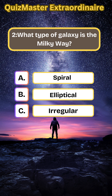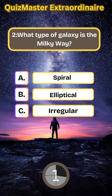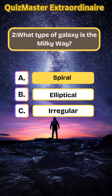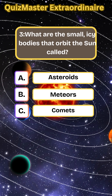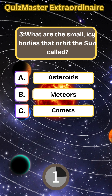What type of galaxy is the Milky Way? Spiral. What are the small icy bodies that orbit the sun called? Comets.